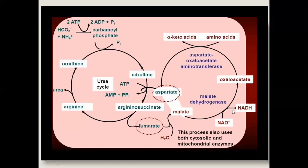So from the three ATP consumed in the urea cycle, minus the 2.5 ATP recovered from NADH via the electron transport chain, the net energy cost is 0.5 ATP.